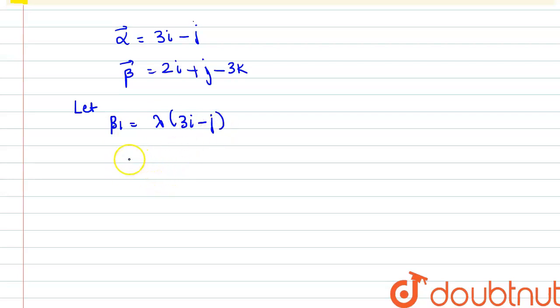And we are given that beta 1 plus beta 2 is equal to beta. So from here we have beta 2 vector as beta minus beta 1. So if we put the values here, we have beta as 2i plus j minus 3k minus beta 1 which is 3 lambda i minus lambda j.